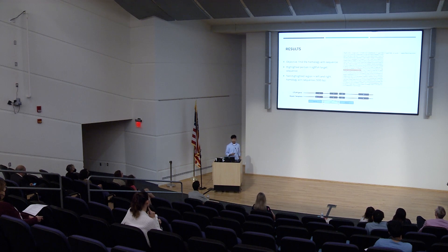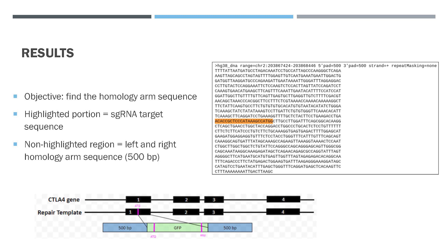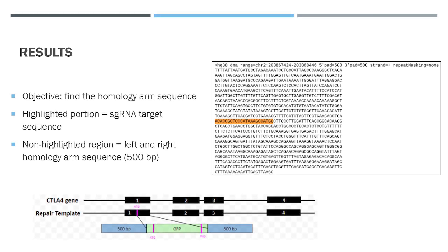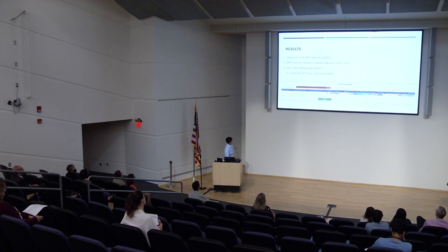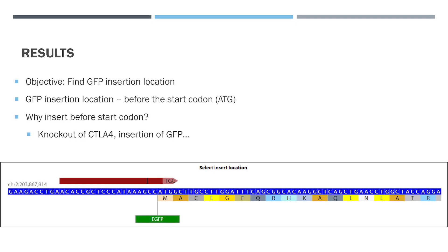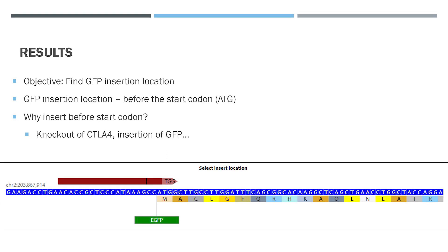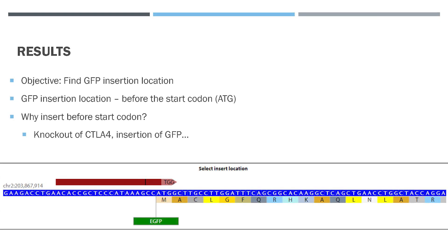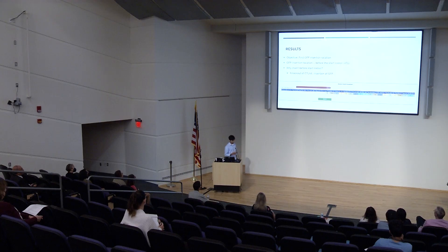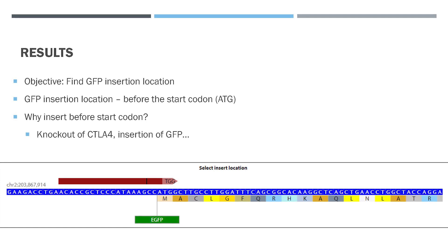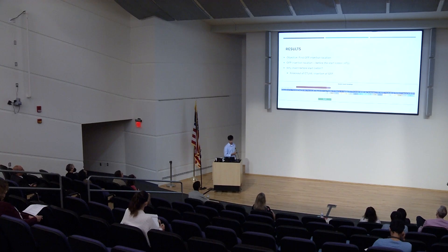Moving on, I used the UCSC Genome Browser to find a homology arm sequence. The highlighted portion is the single-guide RNA target sequence, and the non-highlighted regions on the left and right are the homology arm sequence. I then used Horizon to find a GFP insertion location. We decided to insert GFP right before the start codon, because our main goal is to knock out CTLA-4, and it would be more efficient to knock out CTLA-4 and insert GFP at the same time. ATG is the start codon, and M stands for methionine.